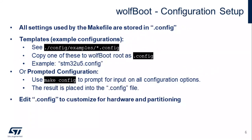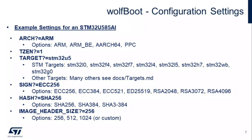After you clone it, the first thing is to define the configuration. We have some templates under the config examples directory, and there are actually two for the STM32 U5 — one with TrustZone and one without. You could optionally run make config, which lists you through about 20 different options, but using one of these templates is the best way to move forward.